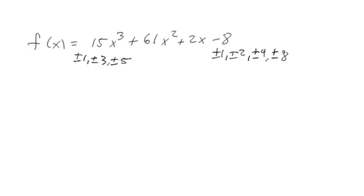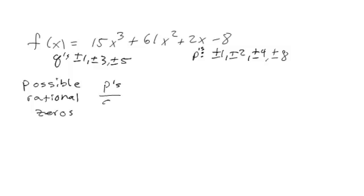Okay, so my possible rational zeros, we also give these a name. We say these are the P's and these are the Q's. So let me fix that, let me put the P's right here, these are my P's right here, and these are my Q's right here. So P's over Q's, that's what we say here, so P's over the Q's.